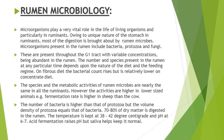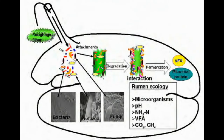On a fibrous diet the bacterial count rises but is relatively lower on a concentrate diet. The species of microbes and metabolic activities of rumen microbes are nearly the same in all ruminants, but fermentation rate is higher in smaller ruminants — for example, fermentation rate is higher in sheep than in cow. Usually the number of bacteria in rumen is higher than that of protozoa, but the volume density of protozoa is equal to that of bacteria.